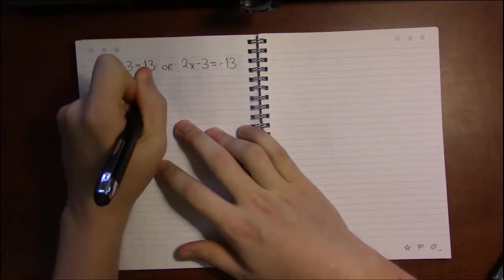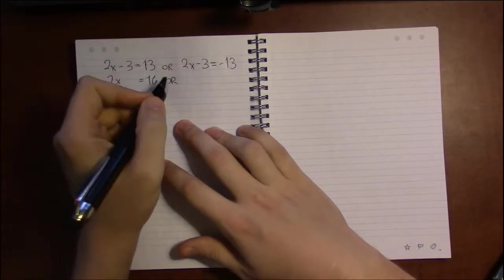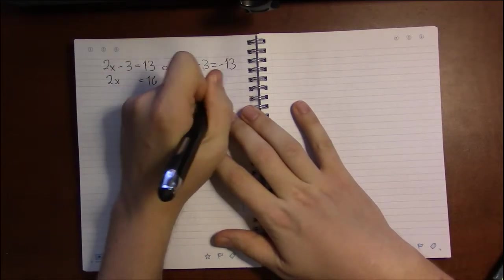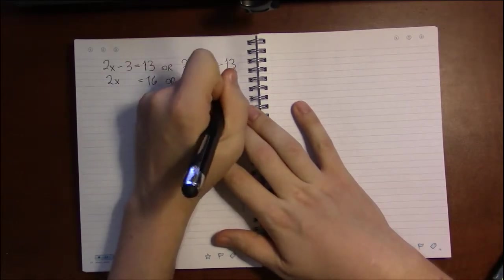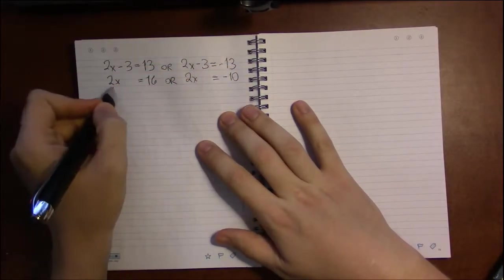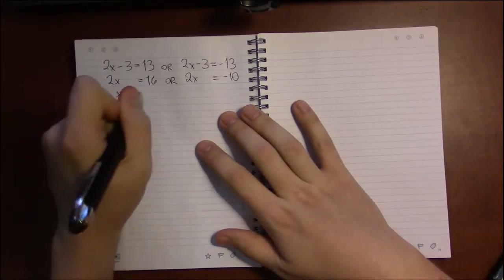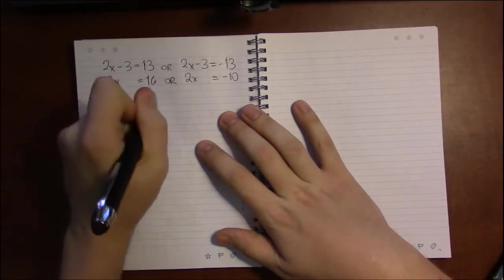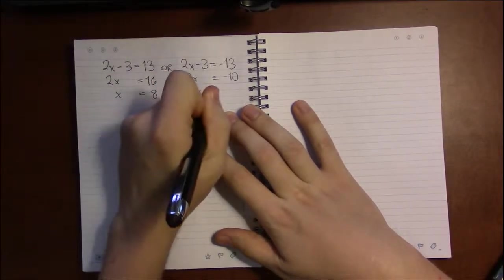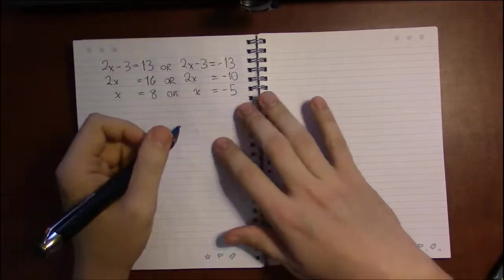On the left-hand side—on the left equation rather—you get 16. And on the second equation, adding 3 makes this minus 10. Now in both equations, the next step is to divide by 2. Well, 16 over 2 is 8, and minus 10 over 2 is minus 5.